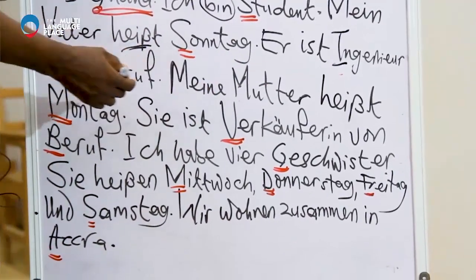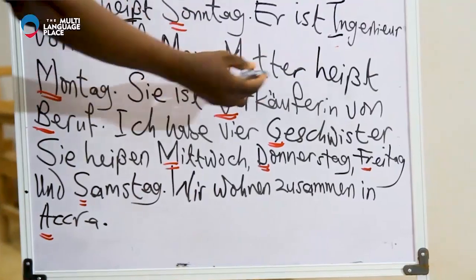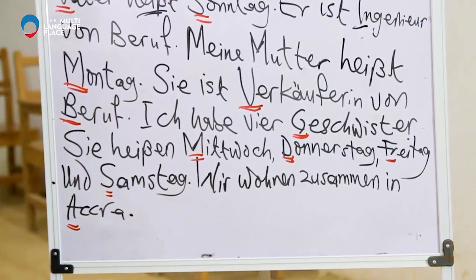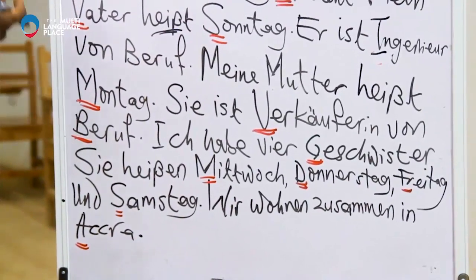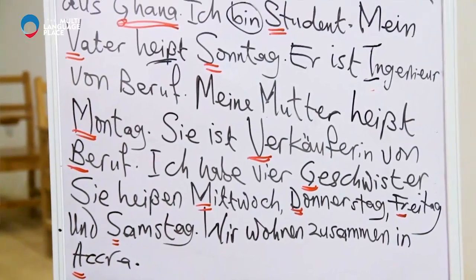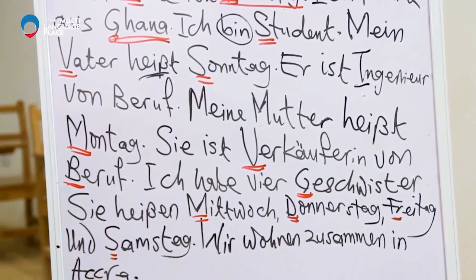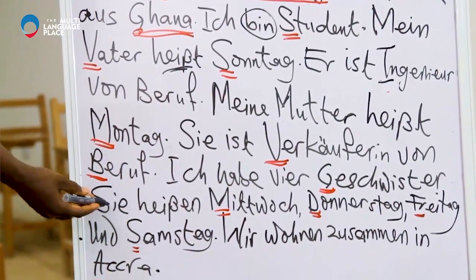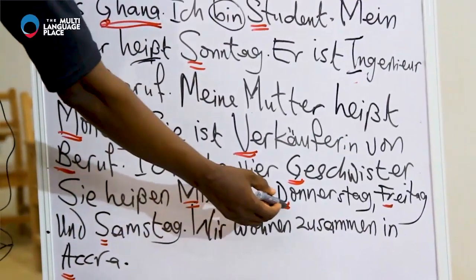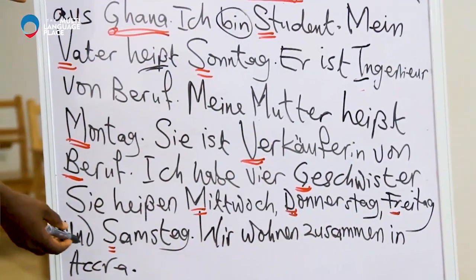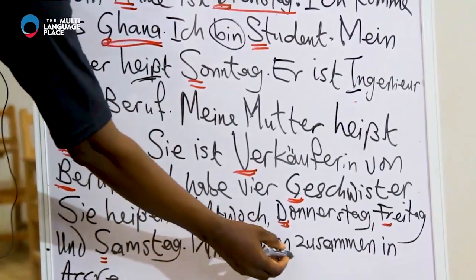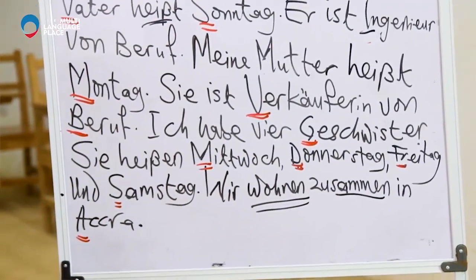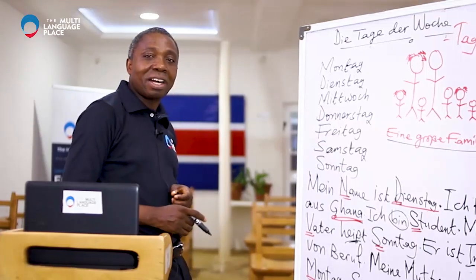Meine Mutter heißt Montag — my mother is called Montag. Sie ist Verkäuferin von Beruf — she is a female seller by profession. Ich habe vier Geschwister — I have four siblings. Sie heißen Mittwoch, Donnerstag, Freitag und Samstag. Wir wohnen zusammen — we live together. Zusammen is a new word meaning 'together'. We live together in Accra, Ghana.